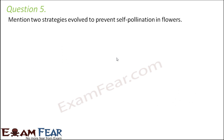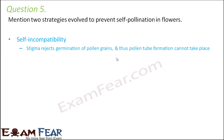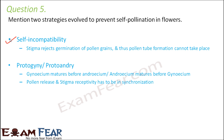Question 5: Mention two strategies evolved to prevent self-pollination in flowers. Self-pollination is prevented because it doesn't give new varieties — no new traits are introduced — so cross-pollination is preferred. One strategy is self-incompatibility: if the stigma is not compatible with the pollen grains of the same flower, it rejects them. Once rejected, the pollen grains cannot germinate, no pollen tube is formed, and the pollen grains cannot reach the female gamete. So fertilization does not happen.